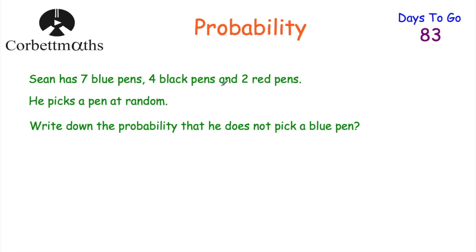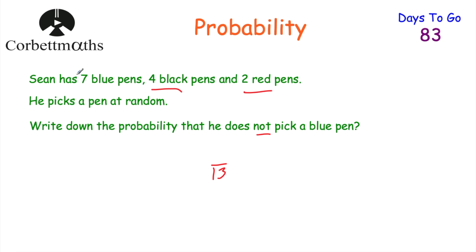Same situation — seven blue, four black, two red pens. This time: write down the probability that he does not pick a blue pen. Altogether there are 13 pens. The pens that are not blue are the black and red pens: four plus two equals six. So it's going to be six out of 13, or six thirteenths.